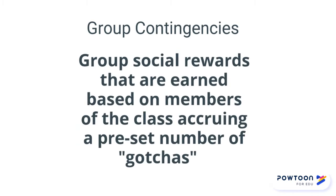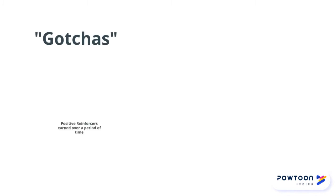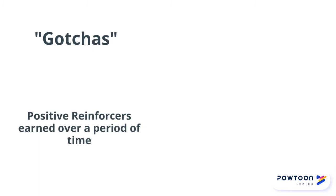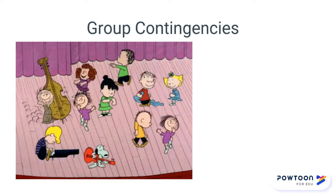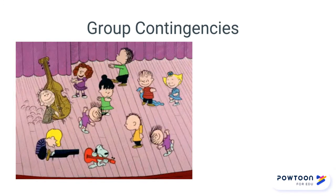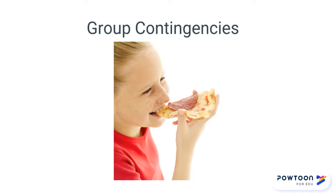Now let's talk about group contingencies. Group contingencies are group social rewards earned based on members of the class accruing a preset number of gotchas. Gotchas could be your positive reinforcers — your Husky Heroes, your J-Bucks — earned over a period of time, or correct behaviors seen during the course of a lesson. A group contingency could be as simple as a dance party when everyone is working well in small groups and you notice at least 10 kids doing the right thing, or a pizza party when the kids have done great all month long.